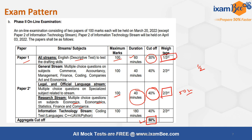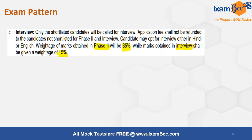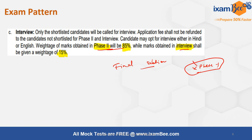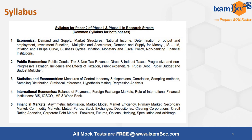Once you clear Phase 2, you are shortlisted for the interview. Marks from Phase 2 and the interview are combined for final selection. Importantly, Phase 1 marks are not included in the final selection — Phase 1 is only qualifying. For final selection, Phase 2 carries a weightage of 85% and the interview carries 15%.